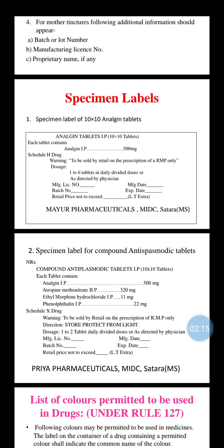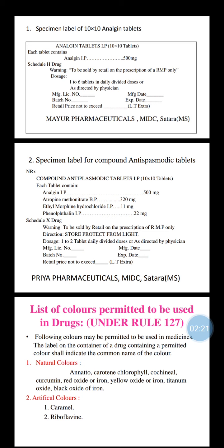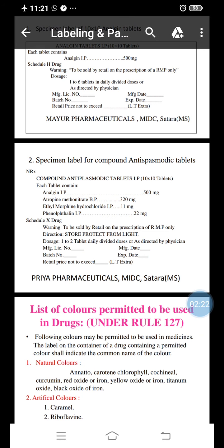The place where the tablets are prepared is shown as 'My Pharmaceuticals,' located in Satara, Maharashtra. That is the place of formulation. The second specimen label is for a Compound Anti-Spasmodic Tablet, written as 'Narcotic Stress Compound Anti-Spasmodic Tablet IP,' in a 10×10 tablet pack.